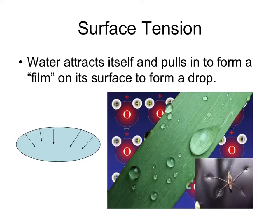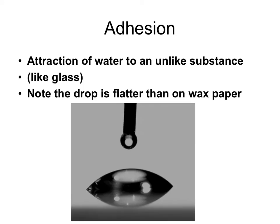That surface tension isn't really a physical barrier or a film on the surface. However, water does stick to itself and does cause surface tension. Adhesion makes water stick to other substances, but water likes to stick to itself first and foremost.